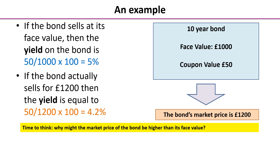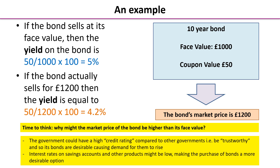Time to think: why might the market price of the bond be higher than its face value? Pause the video and have a discussion or a think. Some reasons: the government could have a high credit rating compared to other governments — it's considered more trustworthy and more likely to pay back its debts, so the bonds become very desirable, causing demand to rise, which pushes the market price above the face value. Another reason might be that interest rates on savings accounts or alternative substitutes are very low, making the purchase of bonds a much more desirable option.